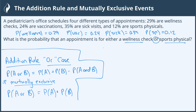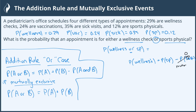I want the probability of a wellness visit or a sports physical. With the 'or' case, I set it up as: P(wellness) + P(sports physical) minus P(both). Since they are mutually exclusive events, P(both) equals zero. So it simplifies to P(wellness) + P(SP) = 0.29 + 0.12 = 0.41, or a 41% chance.